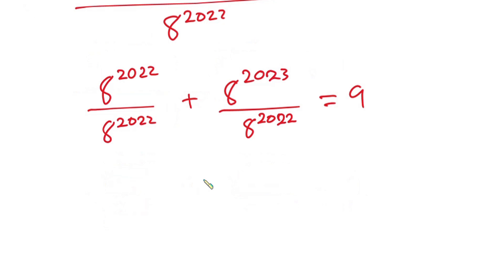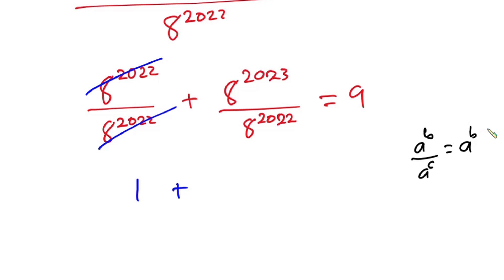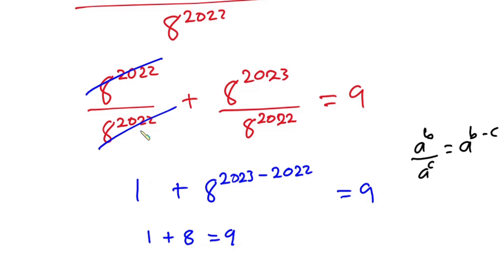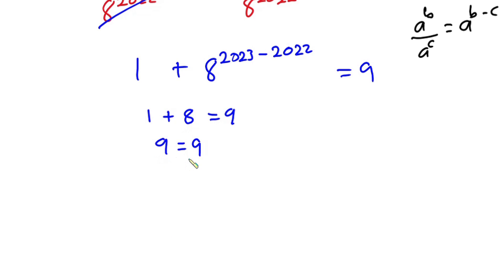The first term cancels to give 1. For the second term, using the indices rule — a to the power b over a to the power c equals a to the power (b minus c) — we get a to the power (2023 minus 2022), which is a to the power 1, which is just a. So we have 1 plus a equals 9. And of course, 1 plus 8 is 9, confirming the left-hand side equals the right-hand side. So x equals 2022 is a valid solution.